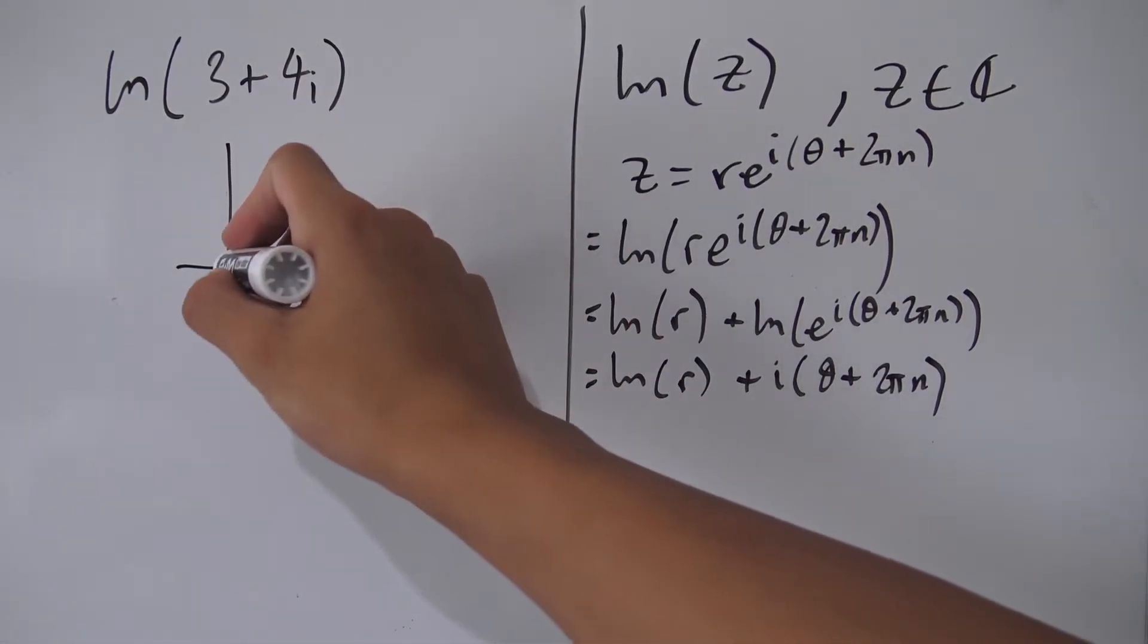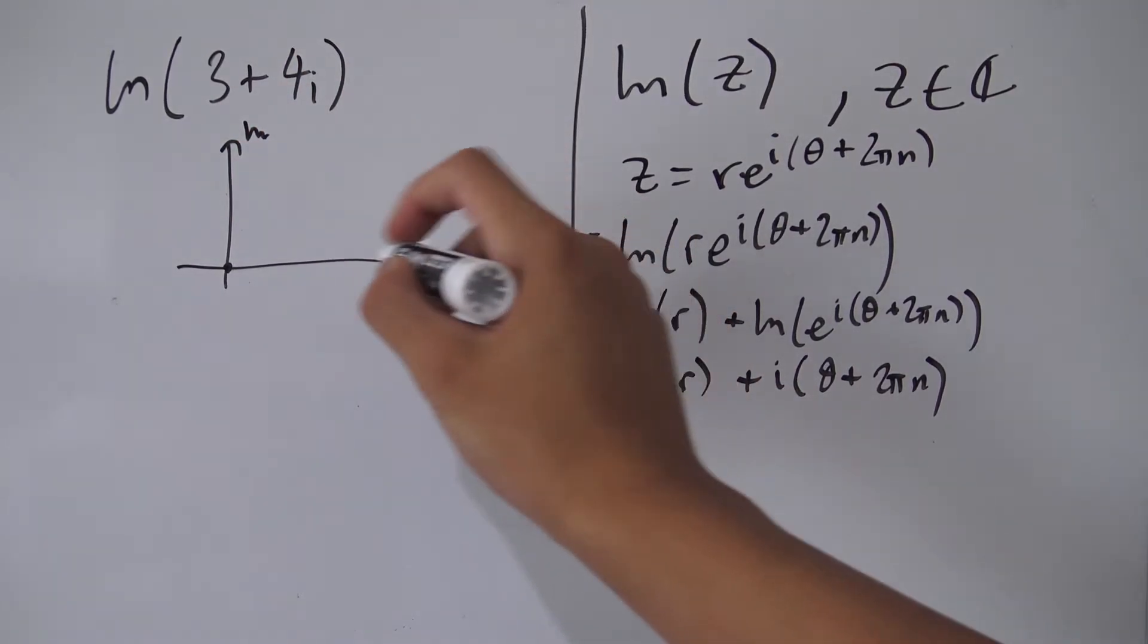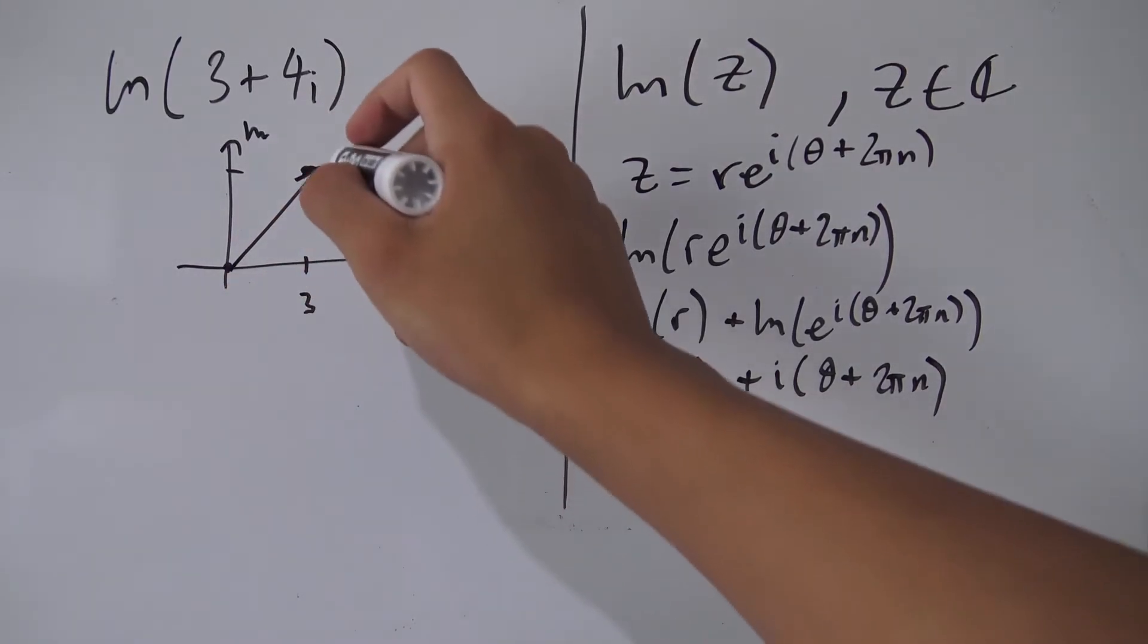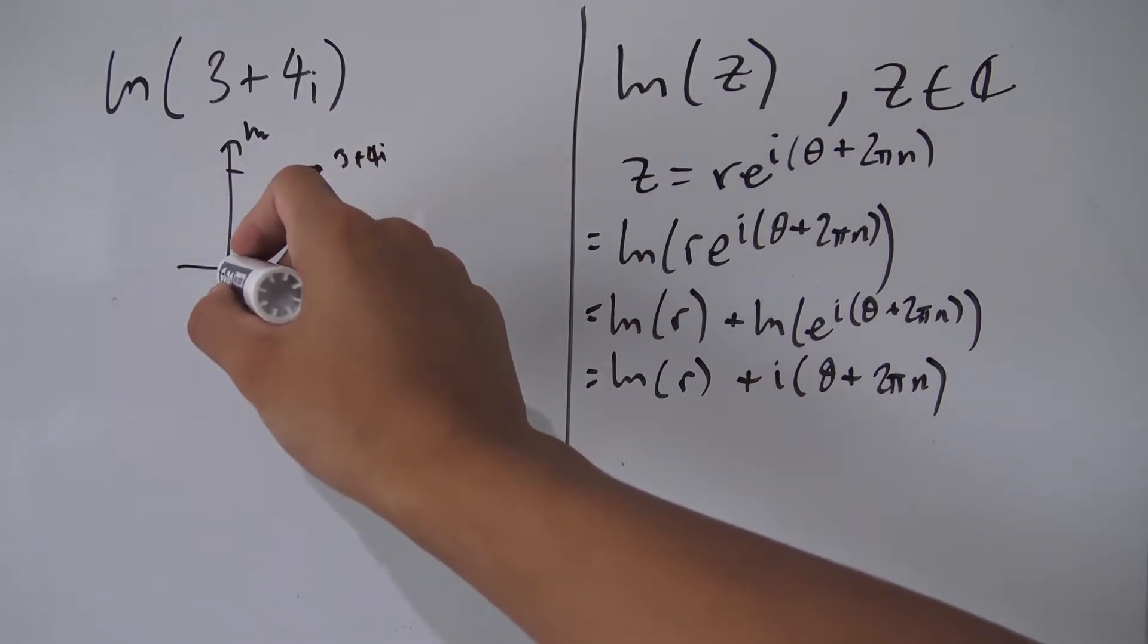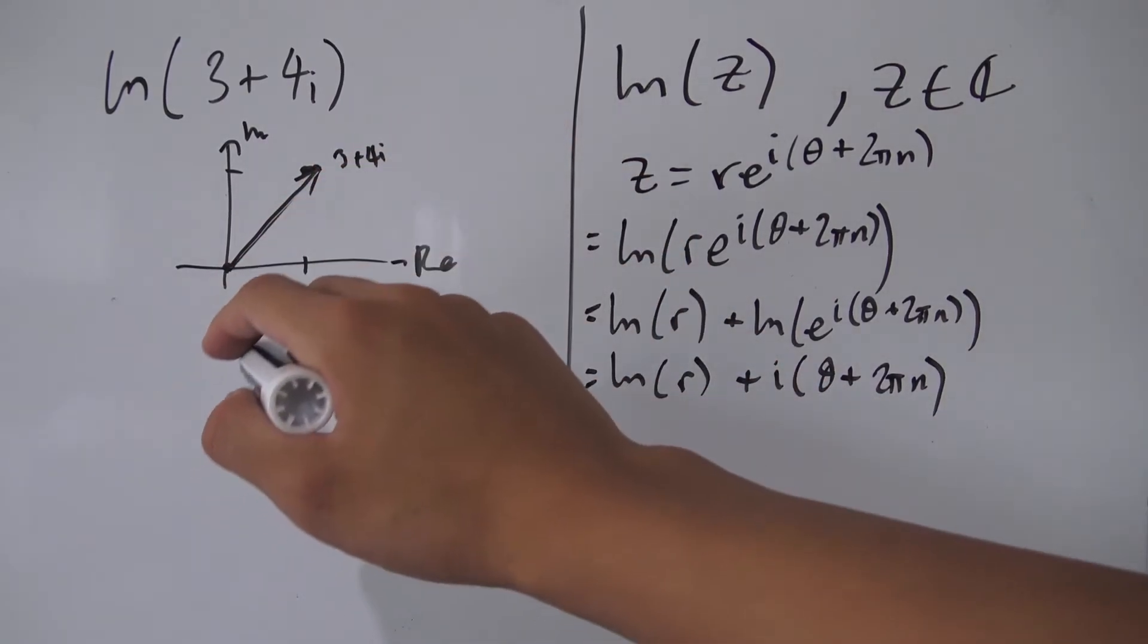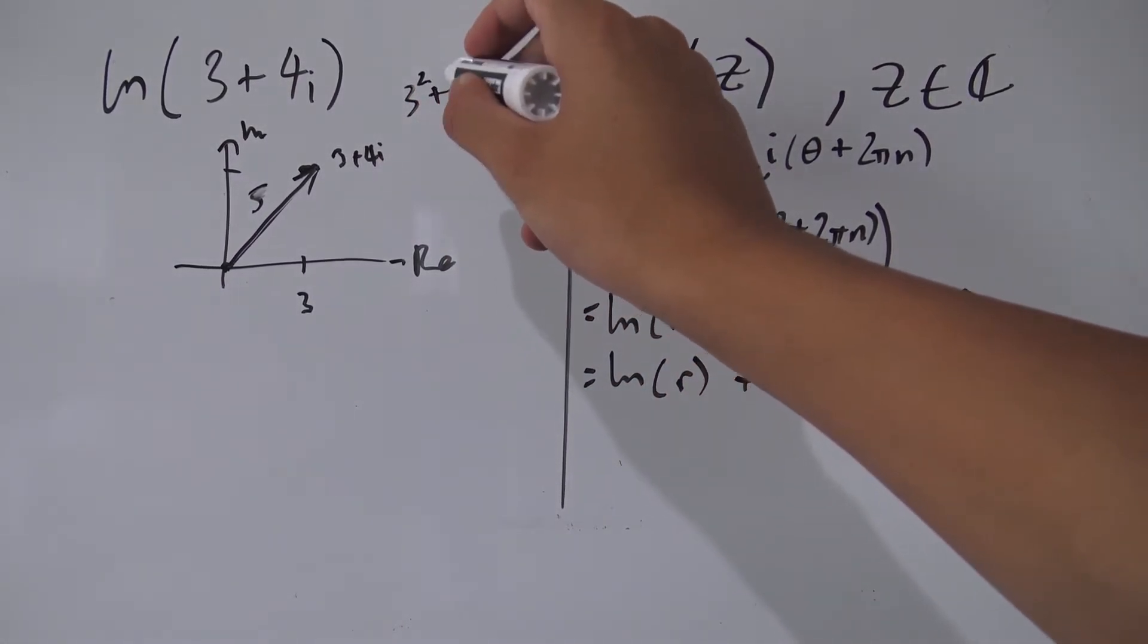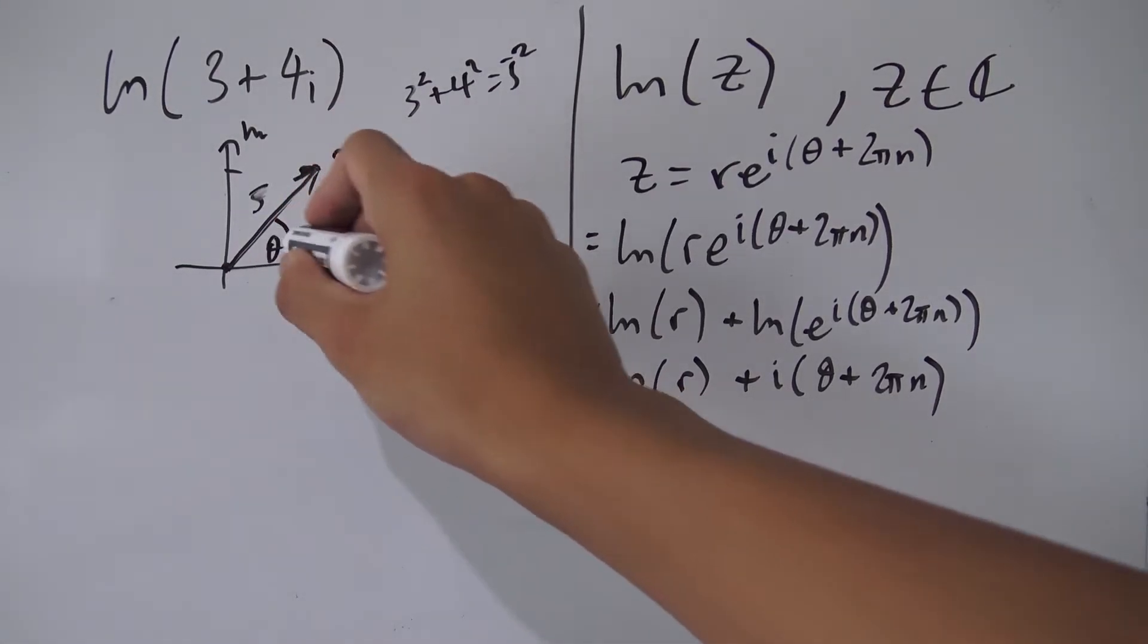So if you look at the complex plane—imaginary, real here—and you have 3 and 4 here, so you want to find the polar form of 3 plus 4i. Well first we have to find out this modulus here. And I chose 3 and 4 because it's an easy Pythagorean triple. The modulus is just 5 because just do Pythagorean theorem: 3 squared plus 4 squared equals 5 squared.